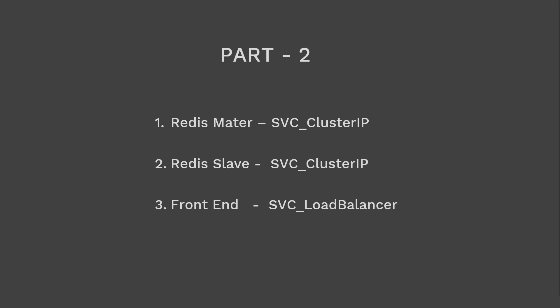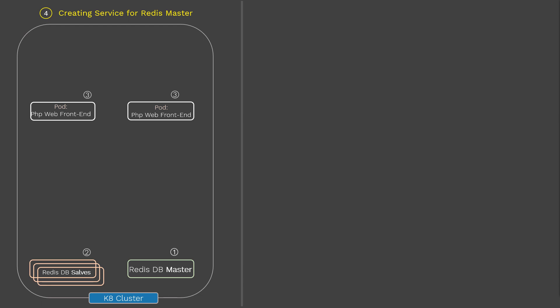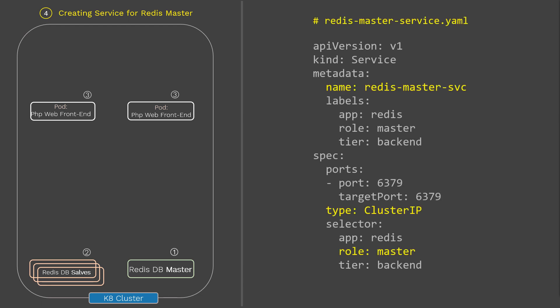When we need to expose the front-end app to the outside world on the internet, we need a service of type LoadBalancer. First, let's create the service for Redis DB master. Here is the service config file — the type is ClusterIP, and we use the same pod labels used in the Redis DB master deployment. You can create this service by running kubectl create followed by this config file. Once done, it will connect the front-end pods to the back-end Redis DB master using those pod labels.